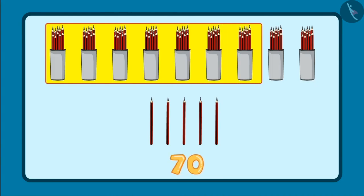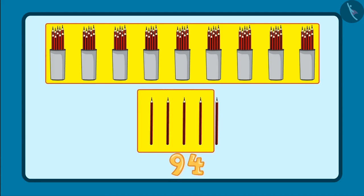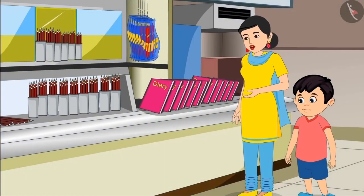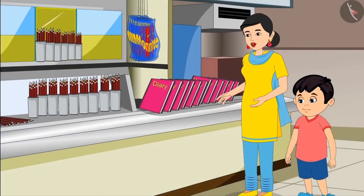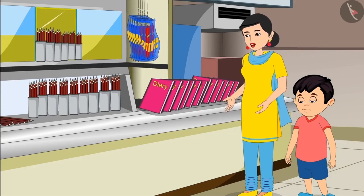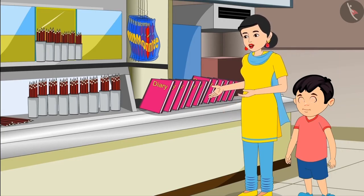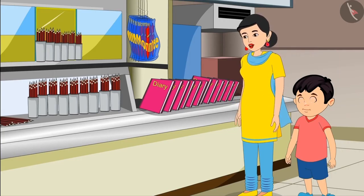So, to give ninety-five pencils, I have to give ten, twenty, thirty, forty, fifty, sixty, seventy, eighty, ninety and five loose pencils. So, that is ninety-one, ninety-two, ninety-three, ninety-four, ninety-five.